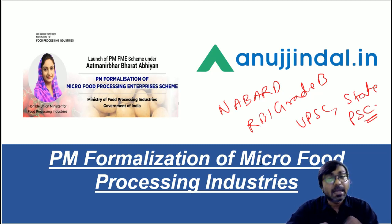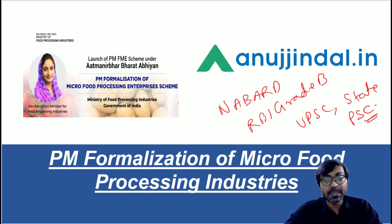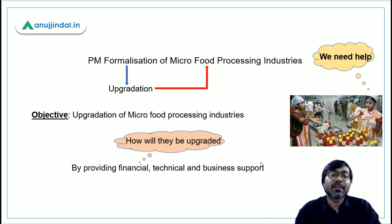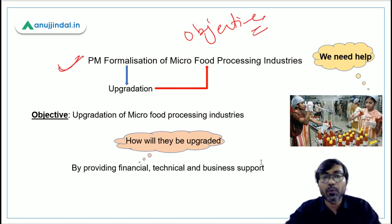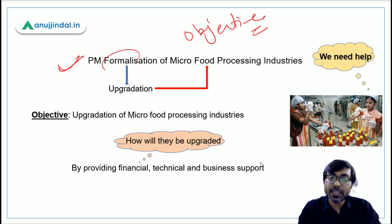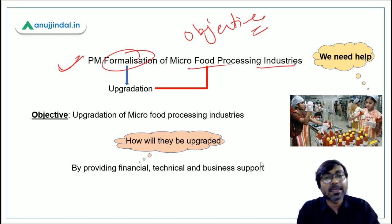As usual, I will present this scheme in a simplified manner. First, we'll cover things that we can understand logically, and then we'll move on to parts that need to be memorized. Let's start with the objective of the scheme. To understand the objective, just concentrate on the name: PM Formalization of Micro Food Processing Industries.